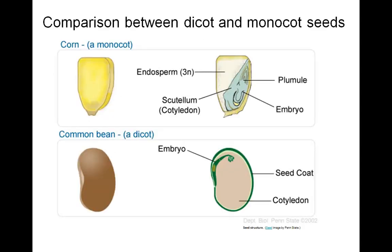Let's take a look at the comparison of dicot and monocot seeds. Corn is a monocot — monocots store a lot of triploid endosperm tissue to serve as a food resource for the germinating seed and growing seedling. In corn, the one cotyledon is known as the scutellum, and the embryonic leaves are known as the plumule. Beans are examples of dicots — dicots produce very little endosperm, so the two large cotyledons serve as the food reserve for the germinating seed and growing seedling.